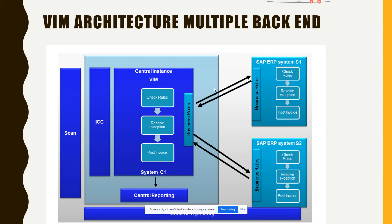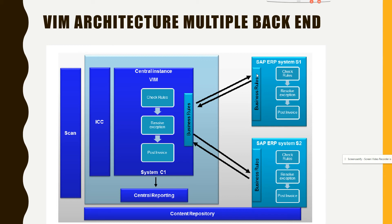This next diagram is for VIM 6/7.5. You have the scan piece, the ICC, the check rules, a central VIM instance, and you can receive invoices from different ERP systems. For example, suppose you have acquired a company from which you will receive more invoices, or you have a large company with multiple SAP instances. Different sources can have different rules, but they all feed into the same central VIM system, which is a separate SAP system.